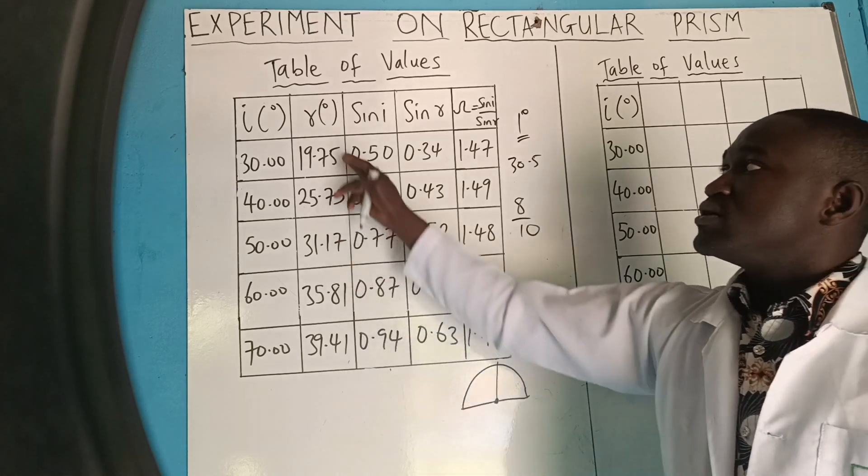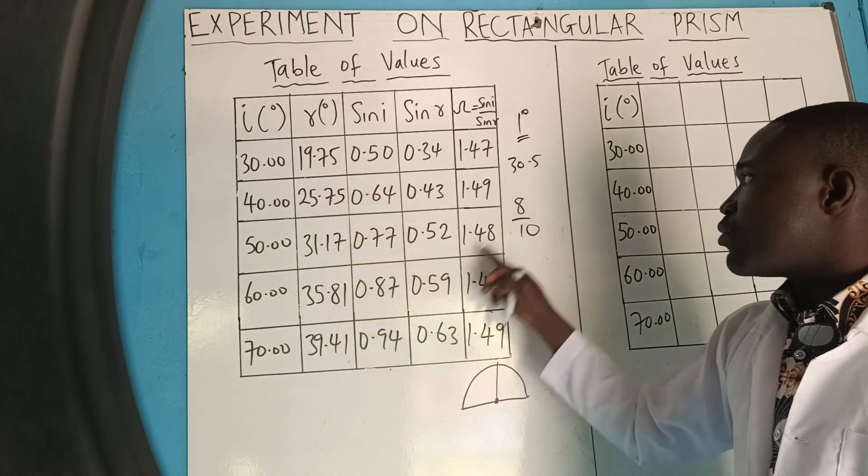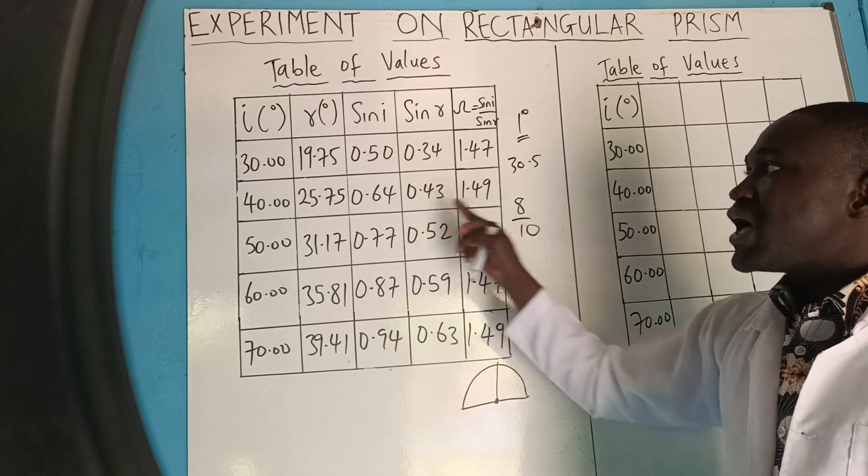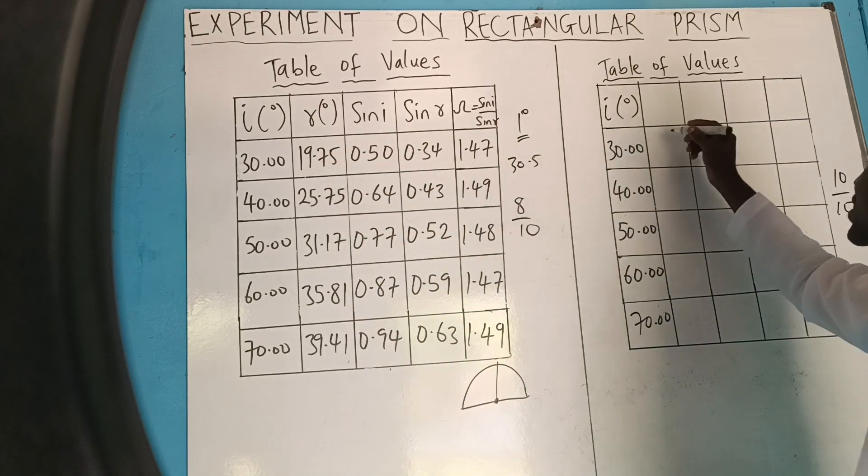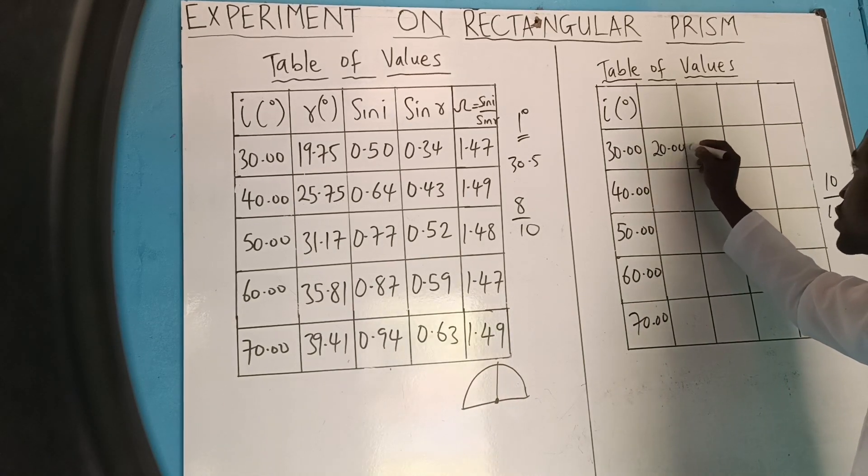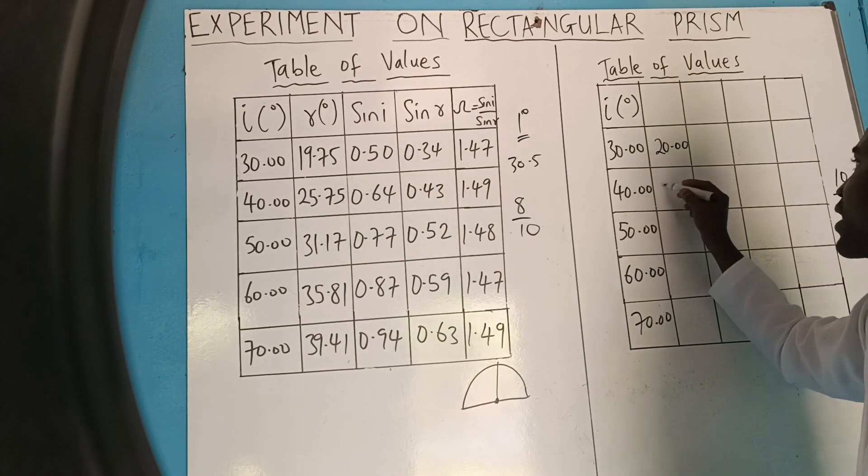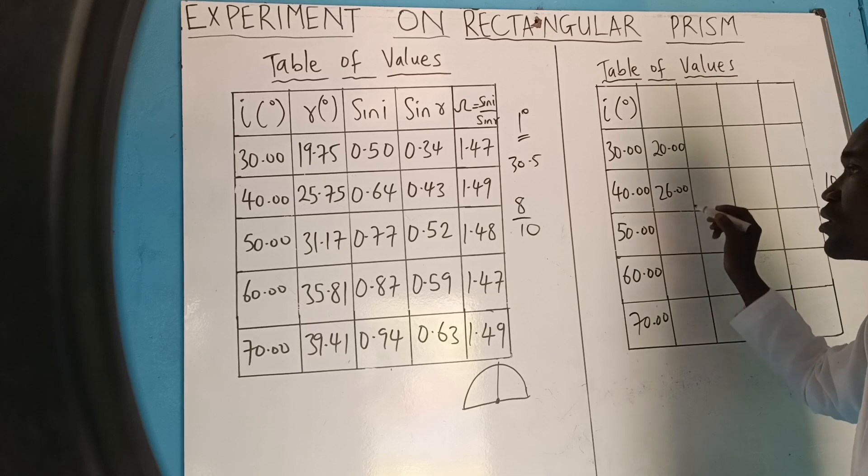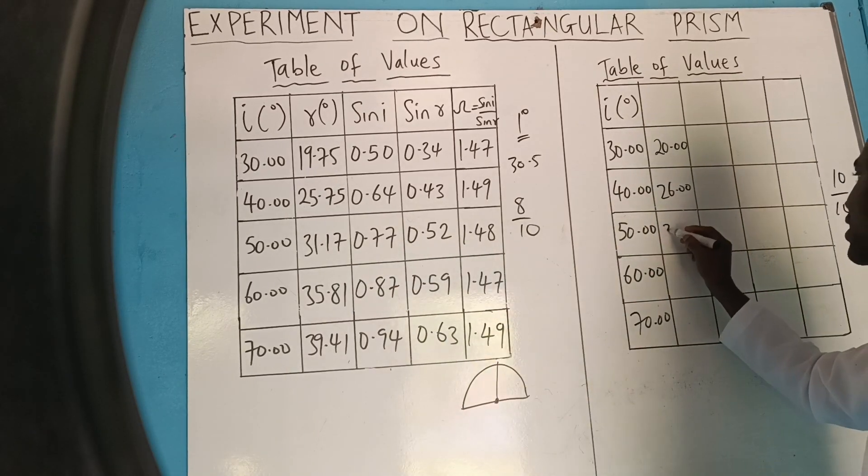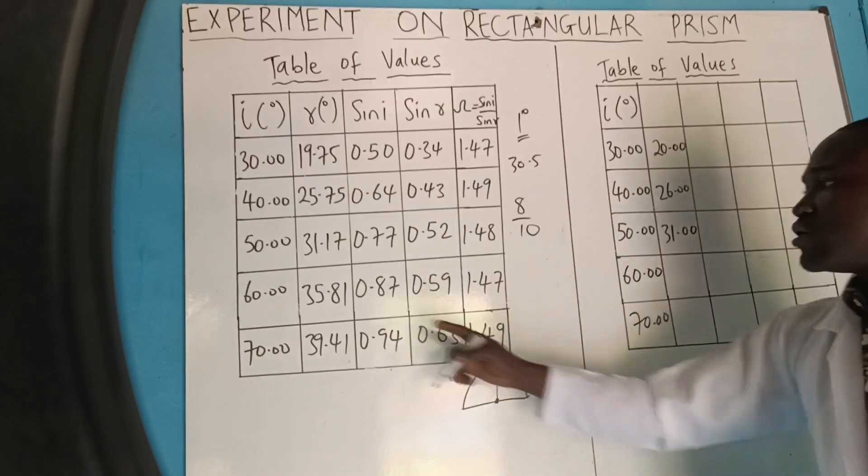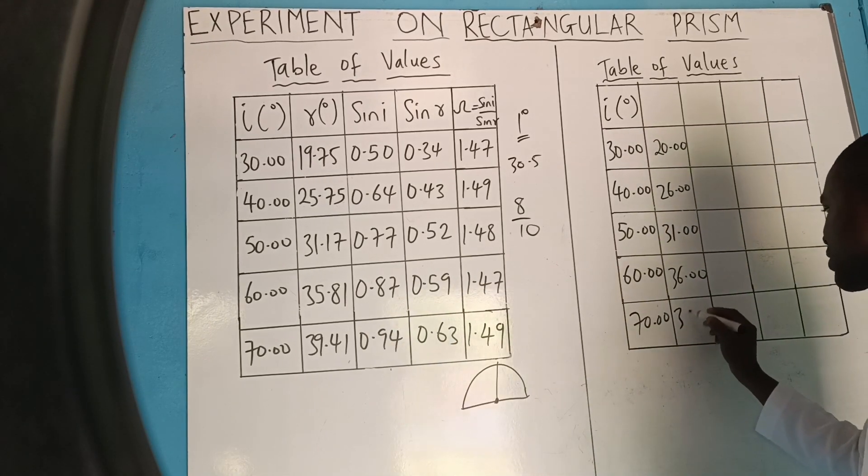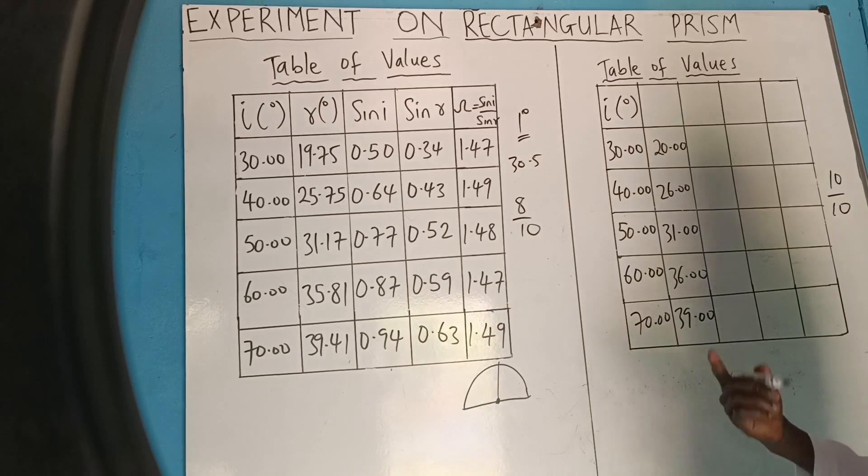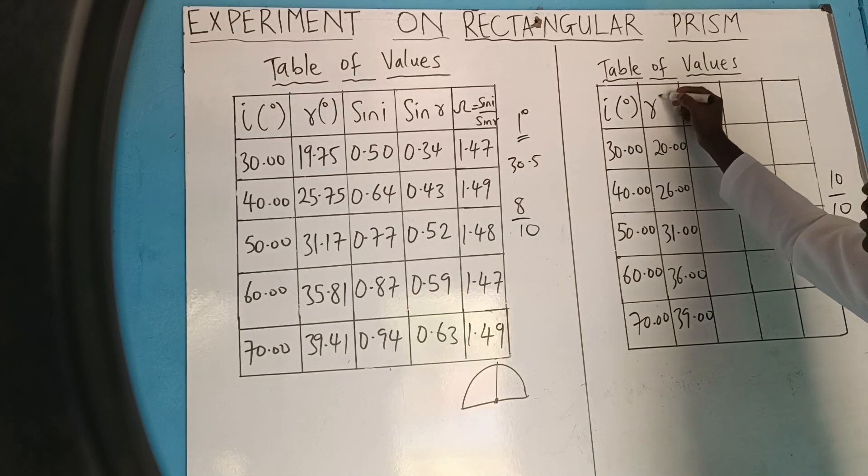And so, that means these are angular refraction values, so to speak. It shouldn't have decimal points. And that is why they will say, let them not give 10 over 10 to that person. So you have to approximate it to nearest angles. If I approximate this, I'll be having 20.00. Approximate this, I'll be getting 26.00. Approximate this, I'll be getting 31.00. Approximate this, 36.00. Approximate this, 39.00.